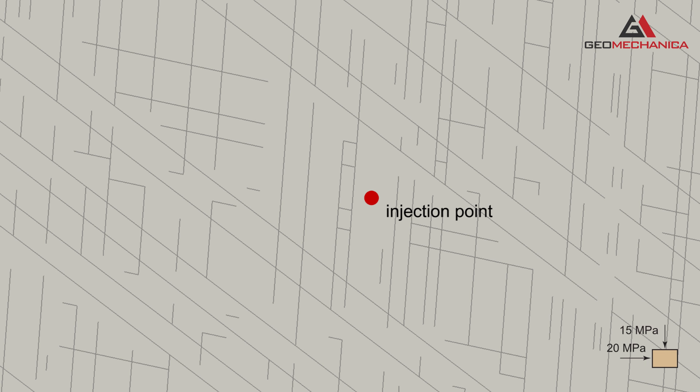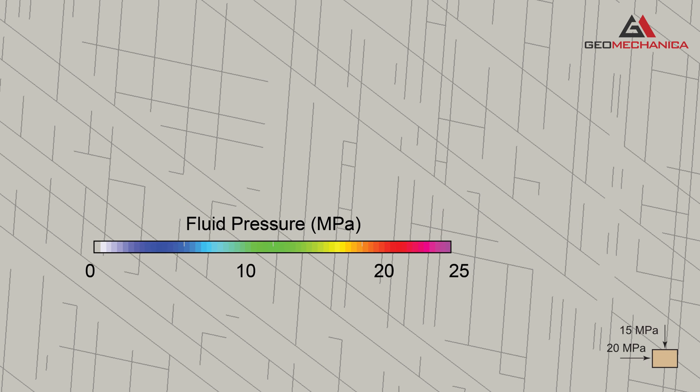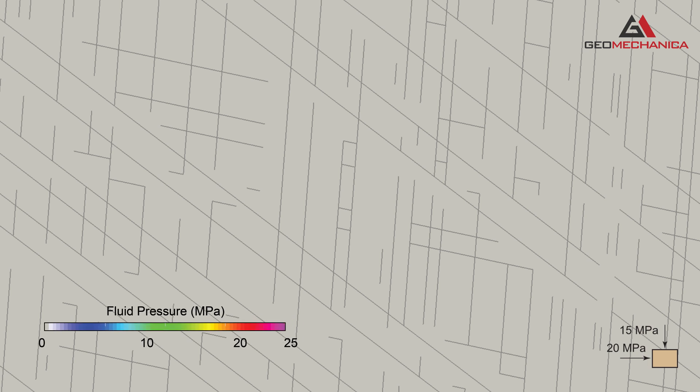Let's now take a look at the results of the simulation. Here we see a close-up view of the fluid injection point where the colors are indicative of the fluid pressure distribution in the surrounding rock mass.